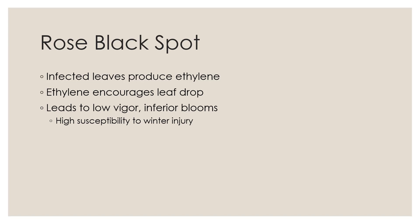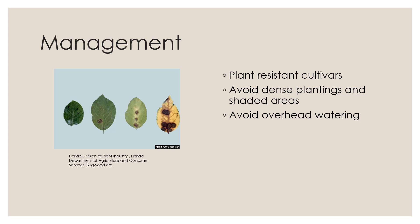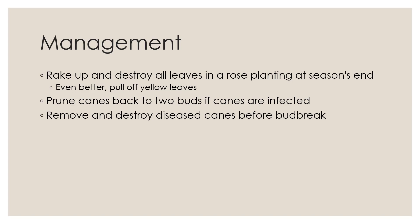To manage rose black spot: plant resistant cultivars (a list from the Pacific Northwest Disease Handbook is available), avoid dense plantings and shaded areas, avoid overhead watering, and rake up and destroy all leaves at season's end — pulling yellow leaves off early is even better. Prune canes back to two buds if infected, and remove and destroy diseased canes before bud break — a good winter task.